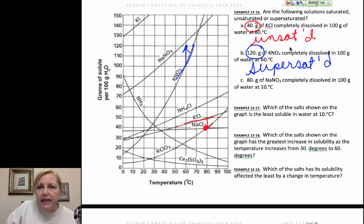Okay, how about 80 grams of sodium nitrate? So, 80 grams of sodium nitrate. We're at 10 degrees. I'm going to go up to 80 grams. We are right on the line. If you're right on the line, it's a saturated solution.